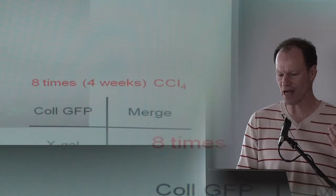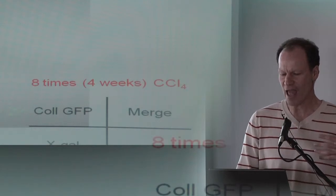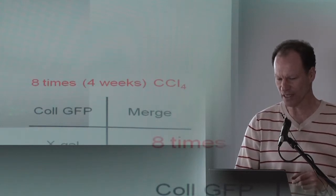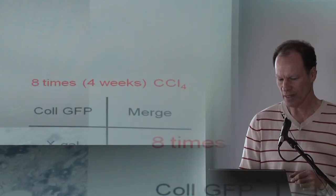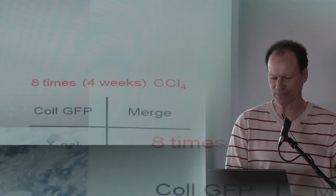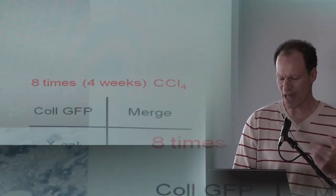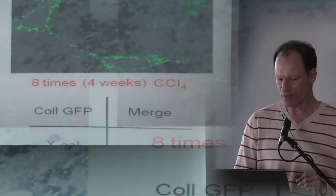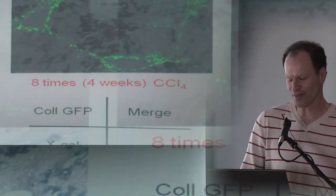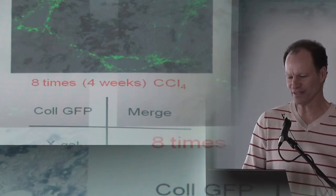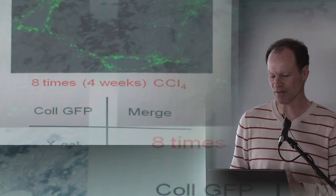We do this in the presence of an albumin Cre ROSA 26 mouse. Here is a myofibroblast. Here are the positive cells using beta-galactosidase lighting up hepatocytes. You see a large number of hepatocytes, a large number of myofibroblasts, and when you either do overlap or purify them to homogeneity, none of the myofibroblasts originate from hepatocytes.